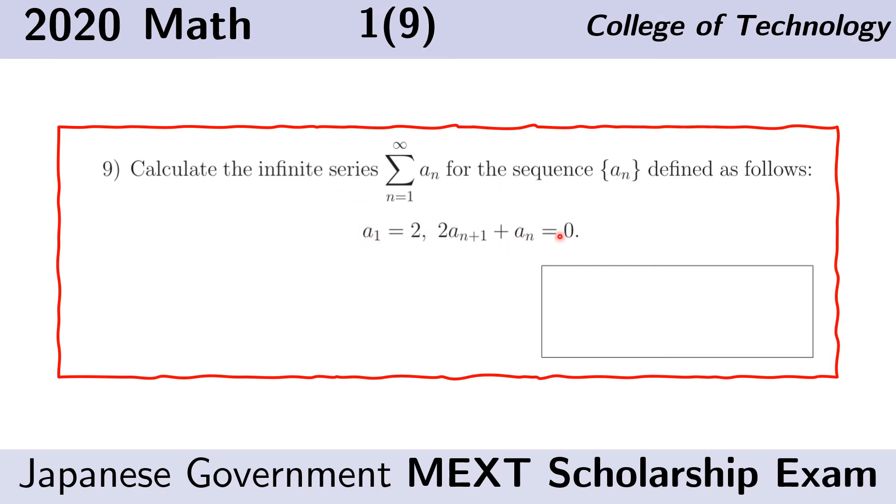A slight rearrangement of the given would reveal that we in fact have a geometric series. A sub n is a geometric sequence. And so, to solve this, we just need to find the common ratio and the first term.